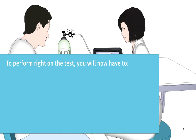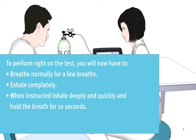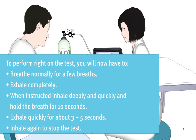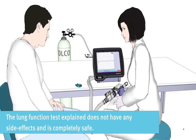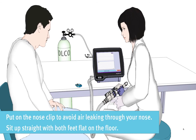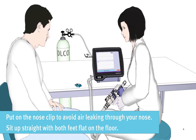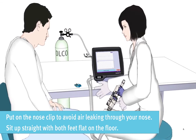To perform the test correctly, you will breathe normally for a few breaths, then exhale completely. When instructed, inhale deeply and quickly and hold your breath for 10 seconds. Then exhale quickly for about 3 to 5 seconds, then inhale again to stop the test. The lung function test does not have any side effects and is completely safe.